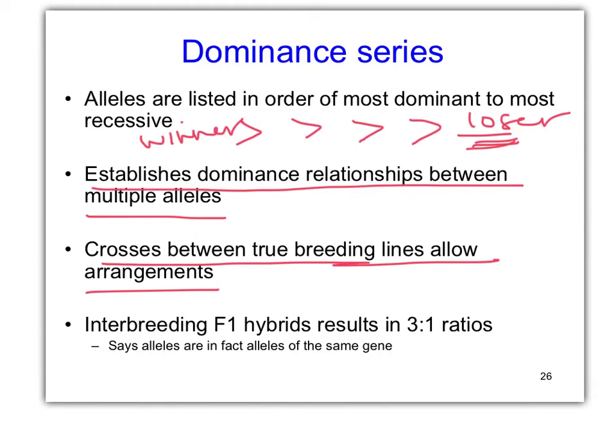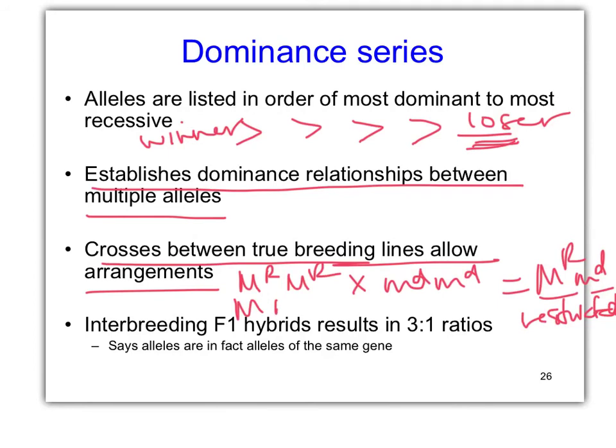We might have to go, if we did this guy, true breeding, times this guy, true breeding. This is restricted times dusky. What's restricted times dusky give you? What are the offspring? You should not need to do a Punnett square. All the offspring are going to look restricted. So that automatically tells you this one's dominant over mallard. What about this one? M over this guy? What do we get? All mallard. Mallard is dominant over dusky.